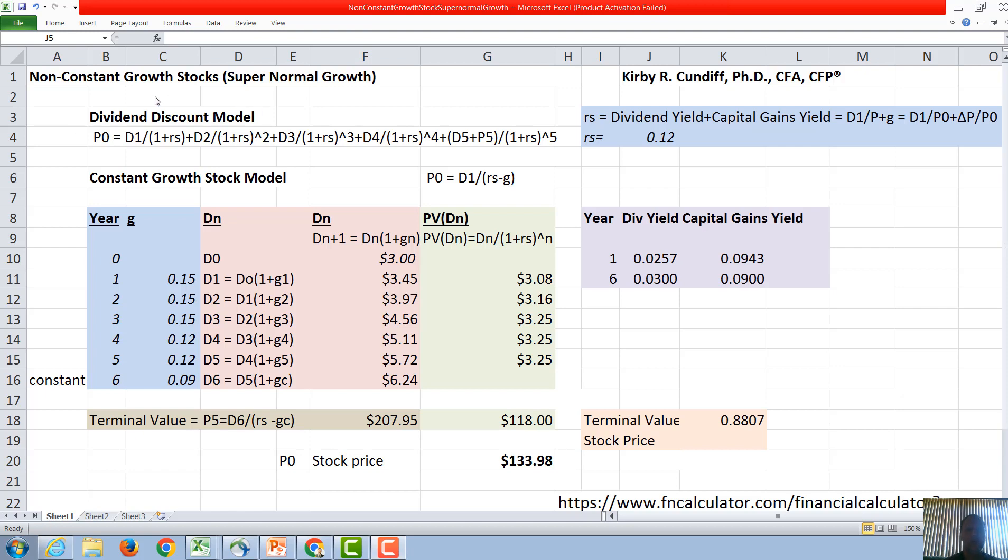We will use the dividend discount model. In general, for the dividend discount model, the price of a stock P0 right after a dividend D0 is paid is going to be next year's dividend D1 discounted at the cost of capital 1 plus rs, and the dividend after that D2 divided by (1+rs)², D3 divided by (1+rs)³, D4 divided by (1+rs)⁴, etc., to infinity.